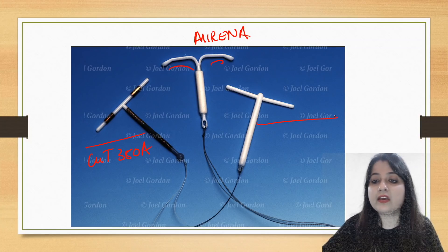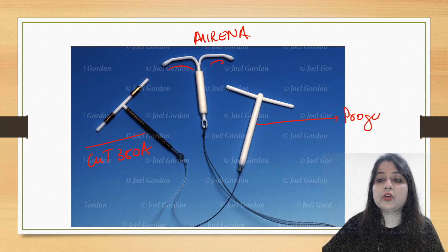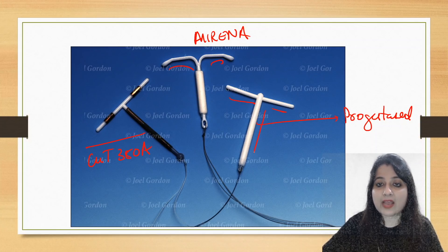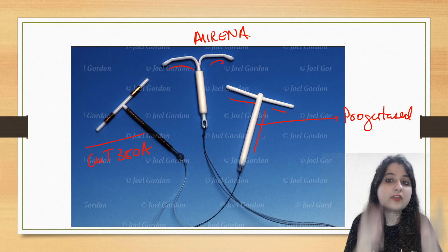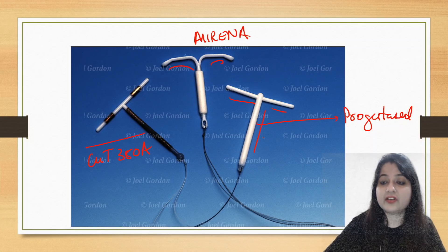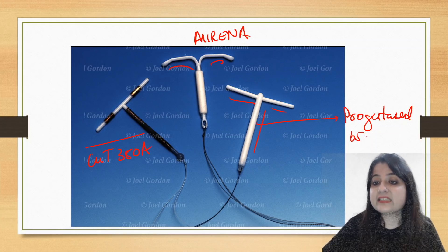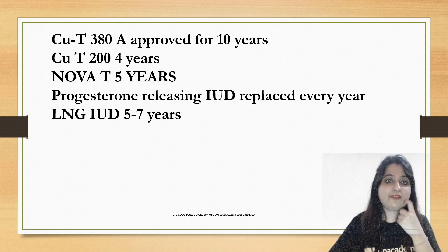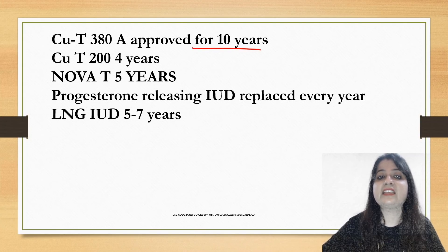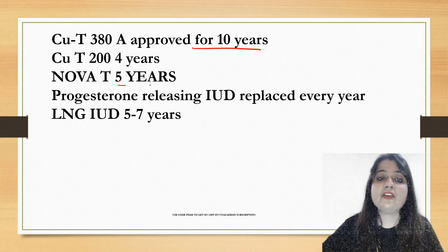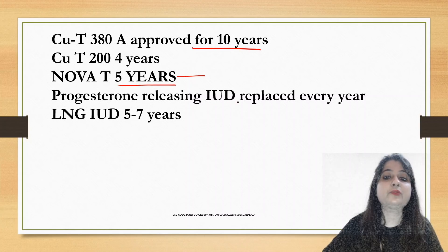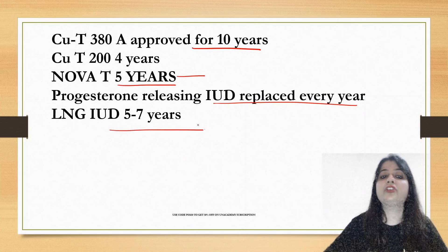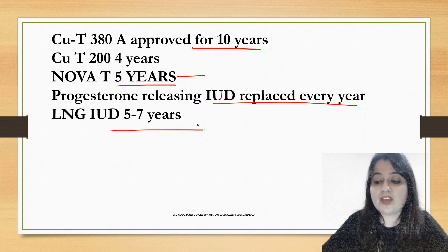And if you look over here, this is Progestacert. Progestacert is completely white but it is straight white — not a curve. It releases 64 micrograms of Progestacert every day. Regarding shelf life: Copper T380A lasts 10 years, Nova T is 5 years, Progestacert releasing IUD lasts 1 year, and Levonorgestrel IUD lasts 5 to 7 years.